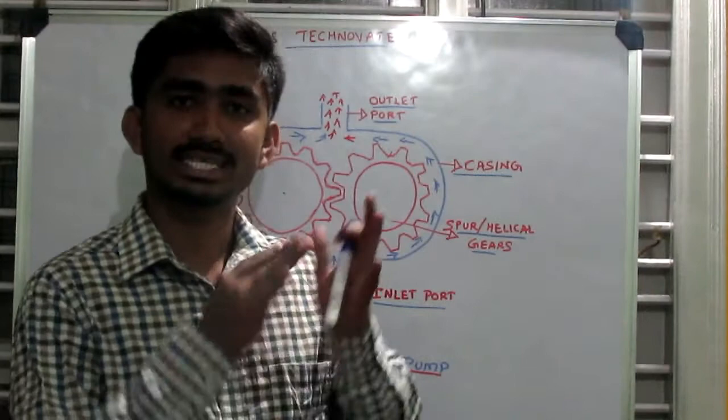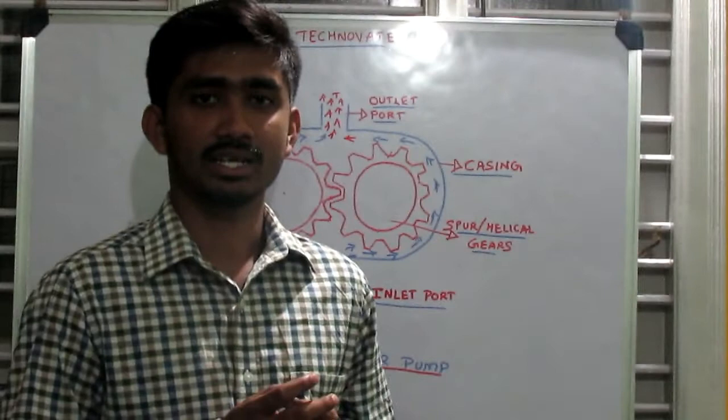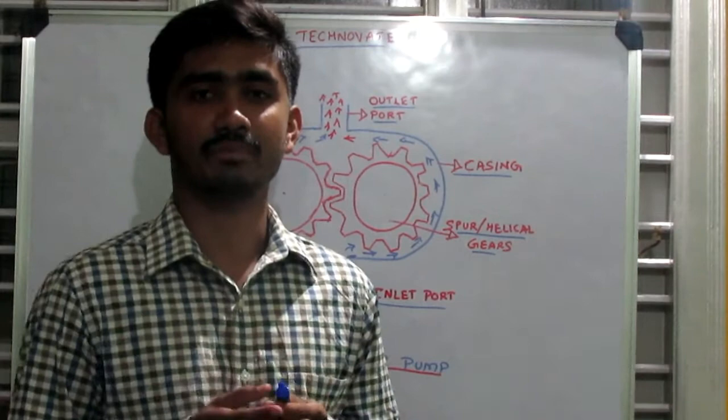some internal operation takes place and the low pressure fluid flows inside the pump. When it comes to the outlet, the pressure of the fluid gets increased. So let us learn this principle and know how an external gear pump works.